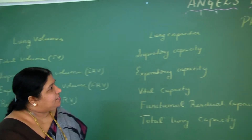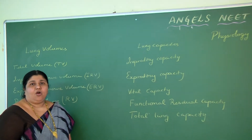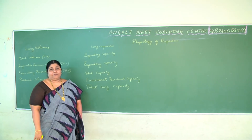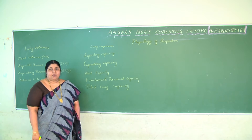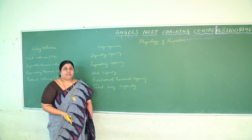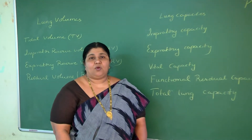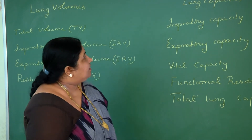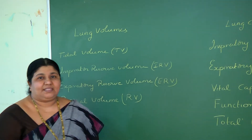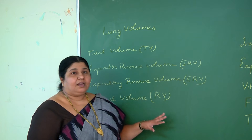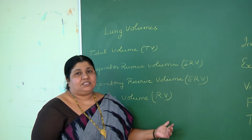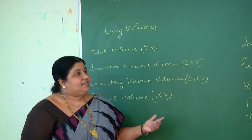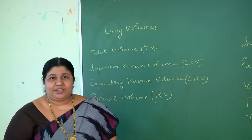Now coming to respiration — physiology of respiration. Yesterday we started about the mechanism of respiration, which is commonly called as breathing. We discussed about inspiration and expiration, that is inhalation and exhalation, and also about forceful expiration. Now let us proceed to the next step in respiration: lung volumes and lung capacities. By estimating the lung volumes and lung capacities, the pulmonologist — the lung specialist — can decide our lung capacity, and this helps them to cure respiratory diseases.